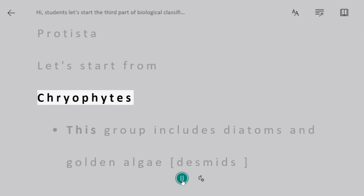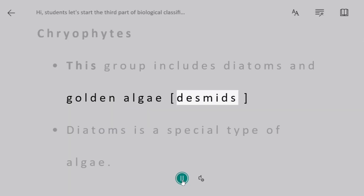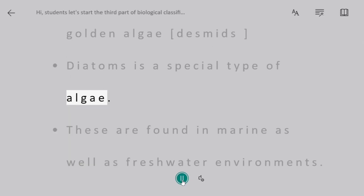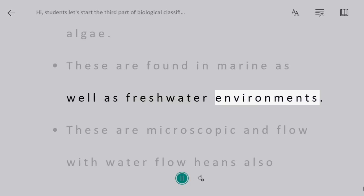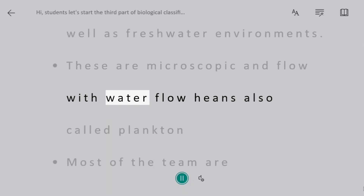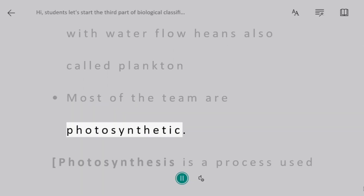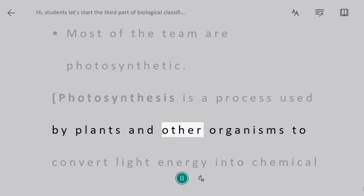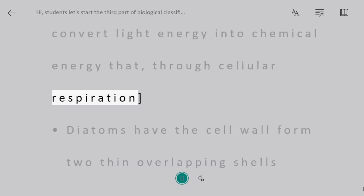Chrysophytes. This group includes Diatoms and Golden Algae. Diatoms are a special type of algae. These are found in marine as well as freshwater environments. They are microscopic and flow with the water current, hence they are also called plankton. Most of them are photosynthetic — photosynthesis being the process used by organisms to convert light energy into chemical energy through cellular respiration.